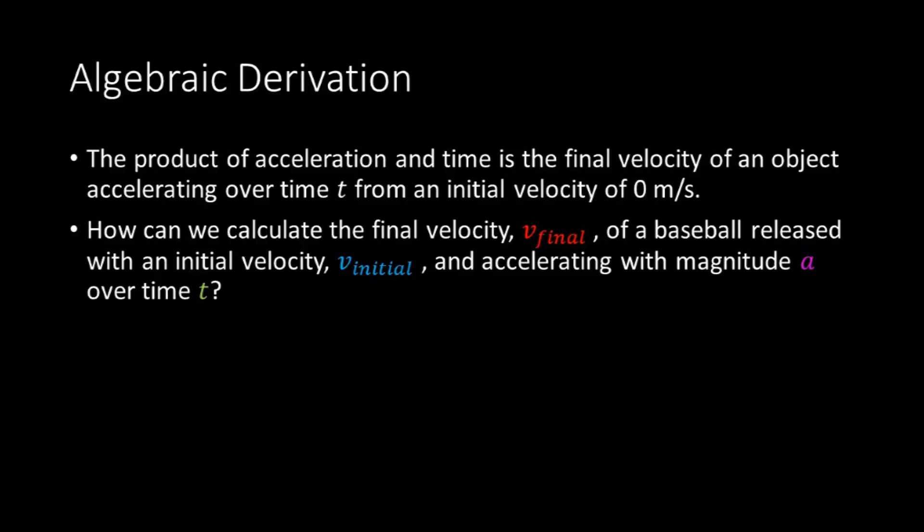So, the product of acceleration and time is the final velocity of an object accelerating over time t from an initial velocity of 0 meters per second.